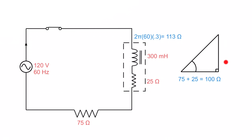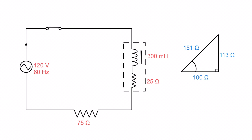Now we have 100 ohms of circuit resistance and 113 ohms of circuit reactance. We can figure out the impedance using the Pythagorean theorem: √(100² + 113²). That gives us 151 ohms of total circuit impedance — the total opposition to current flow in this entire circuit. Because resistance and reactance are in different directions, we must add them vectorially to get 151 ohms. Everything is now unlocked.